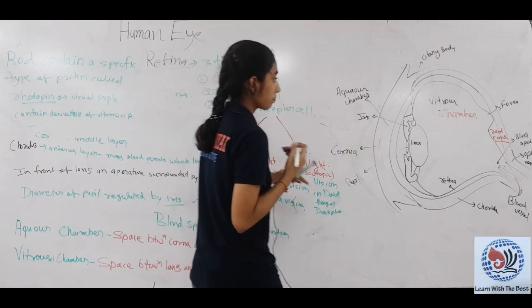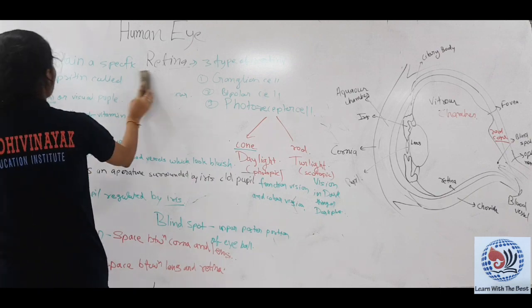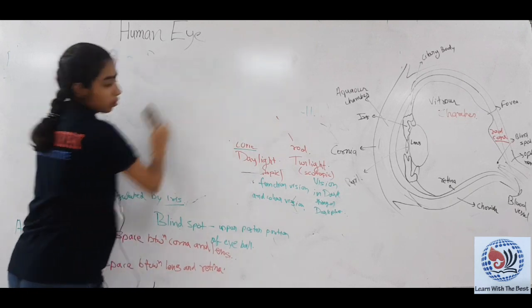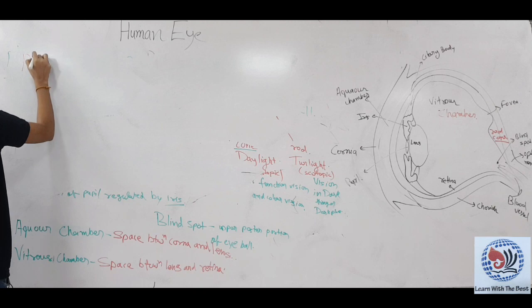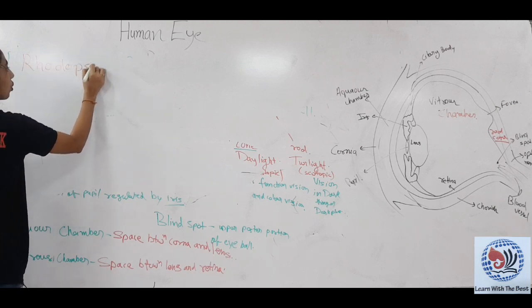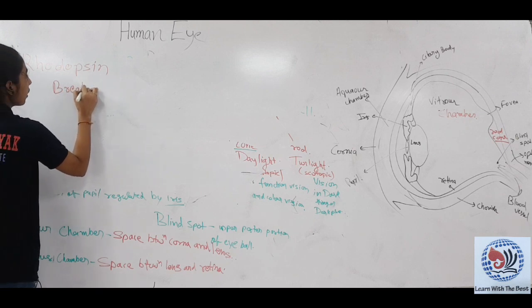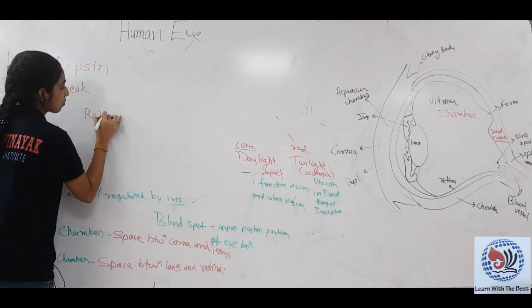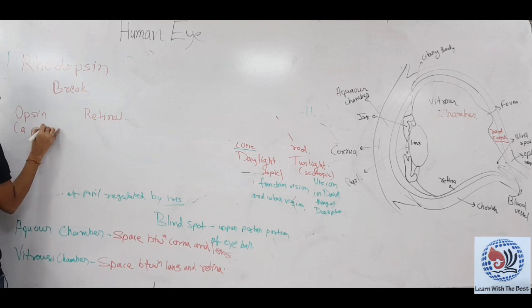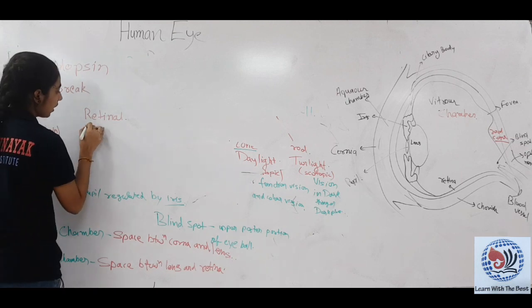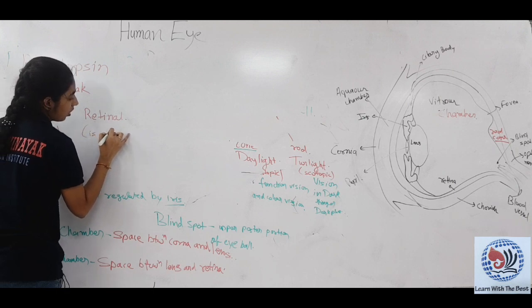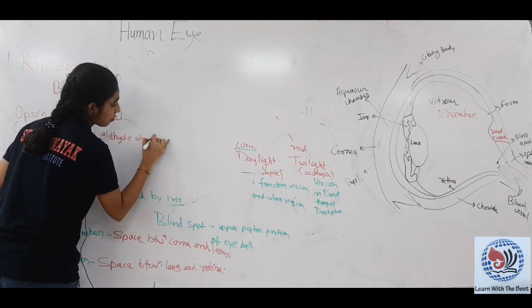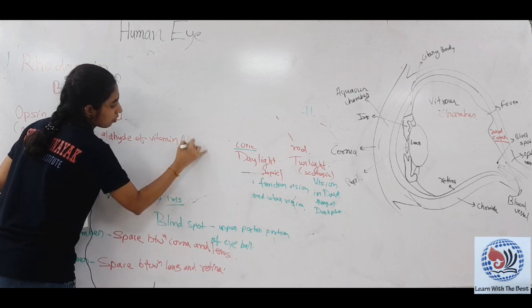Now we will discuss rhodopsin again because rhodopsin breaks down into two components. Rhodopsin breaks into opsin and retinal. Opsin is a kind of protein, and retinal is aldehyde of vitamin A.